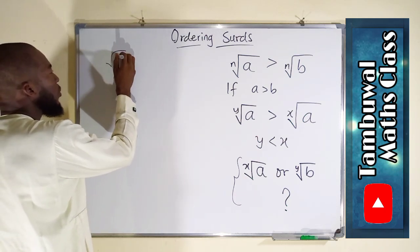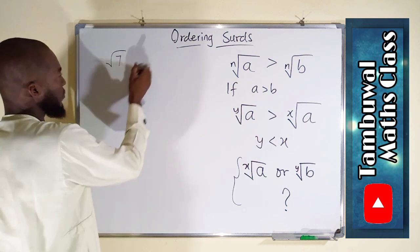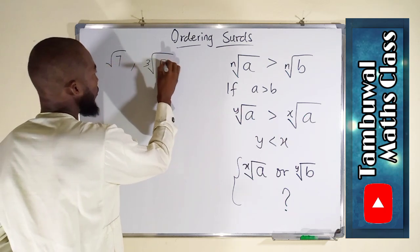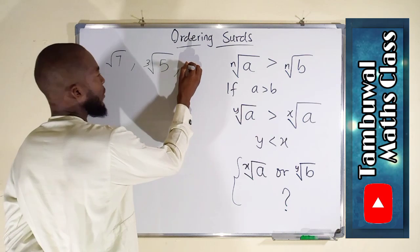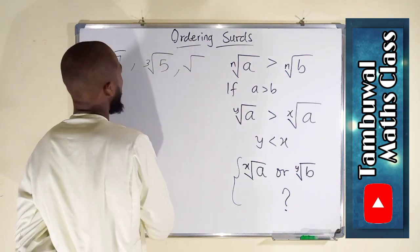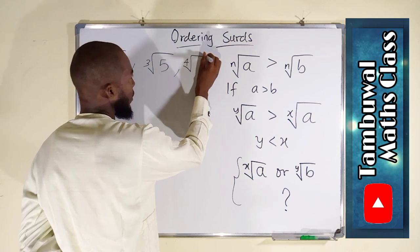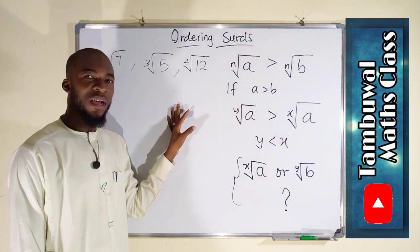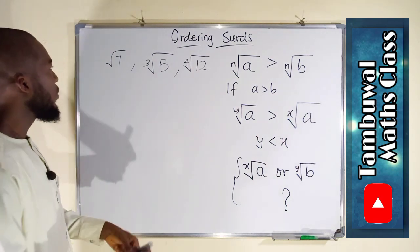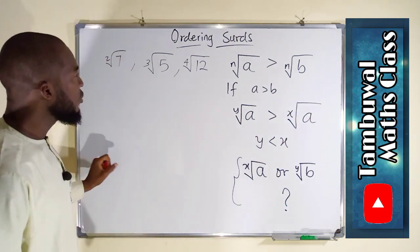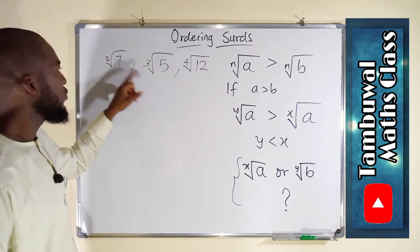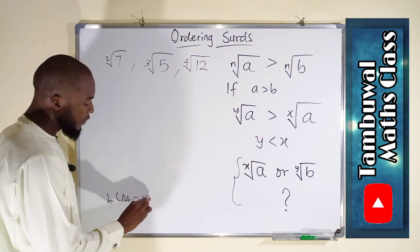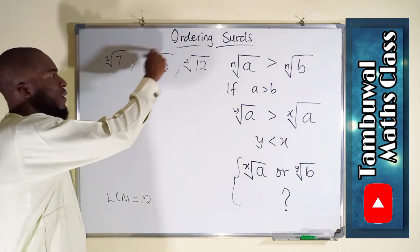Now let us take one more example: square root of 7, cube root of 5, and fourth root of 12. We want to determine the greatest and the least among these three surds. Naturally, the square root has degree 2. The first thing we need to find is the LCM of 2, 3, and 4 — the three degrees. The LCM is 12, so we want to transform each degree into 12.